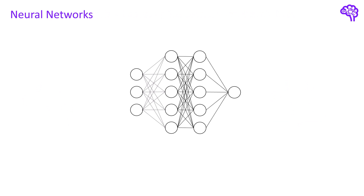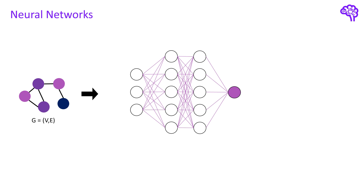I assume that you're familiar with the inner workings of neural networks, as GNNs simply extend classical feed-forward models. In the past there were a variety of other approaches to handle graphs, such as hand-crafted features as input for machine learning models. However, graph data has some interesting properties that make it difficult to work with. In a moment we will find out how GNNs cope with all of these difficulties.